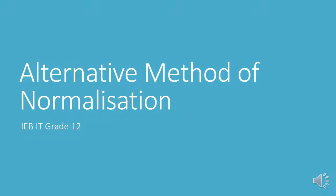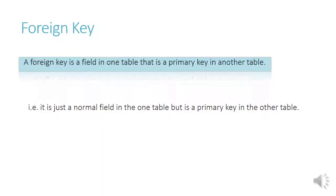Alternative method of normalization, IBIT grade 12. A foreign key is another definition you need to know. A foreign key is a field in one table that is a primary key in another table. So it is just a normal field in the first table, but it's a primary key in the other table.